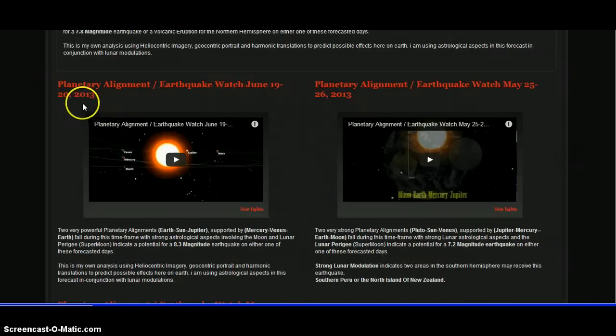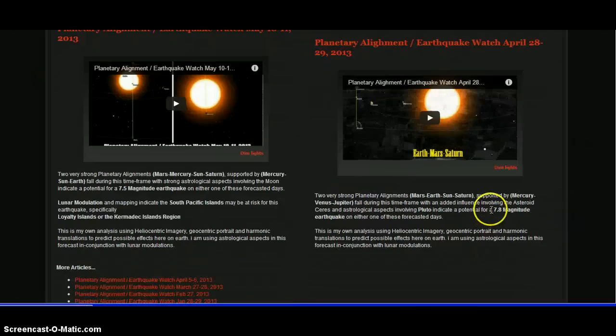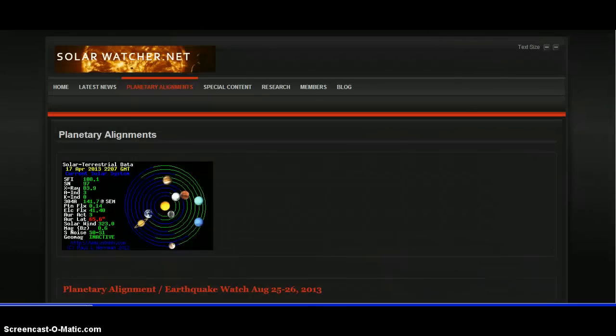Also, June 19th through 20th in 2013, a possibility of an 8.3 magnitude earthquake. Also, a 7.2 magnitude earthquake possibility May 25th and 26th of this year. There's more and more stuff, May 10th through 11th, another 7.5 possibility. Another one on April 28th and 29th, later on this month, another possibility for 7.8. So I'm going to keep our eyes out for all of this. We also have a planetary alignment tomorrow, so you guys want to check into that. That's another factor that causes these earthquakes.